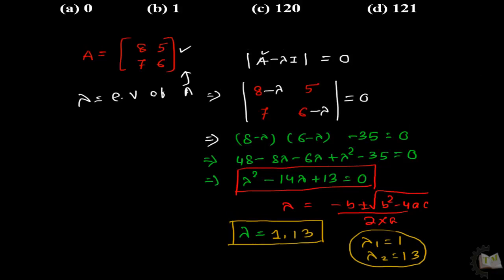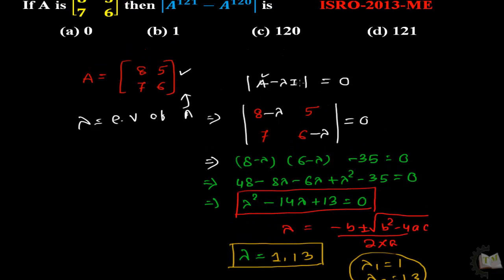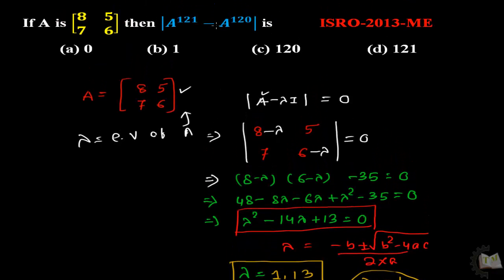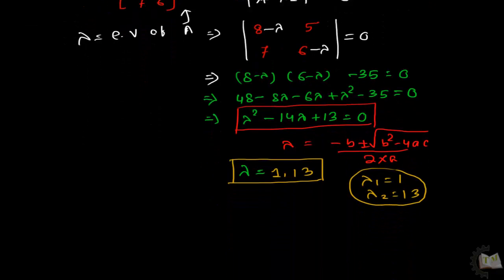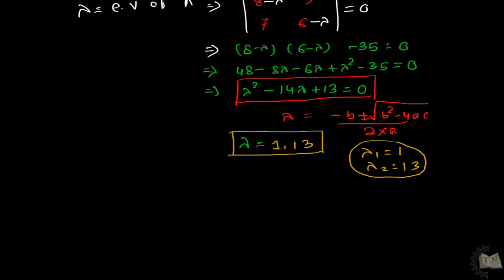Now that we have calculated the eigenvalues of matrix A, we go on to calculate the eigenvalue of A to the power 121. It is very simple: the eigenvalue of A^121, when we take lambda as 1, is simply 1 to the power 121, whose value will be 1.